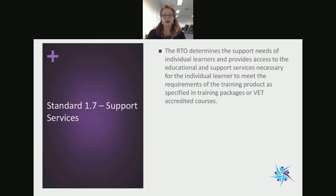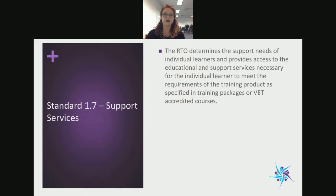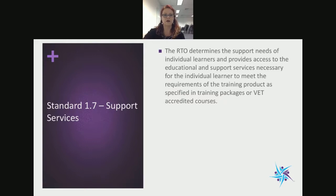You may have noticed that we updated the training and assessment strategy document and the enrolment agreement form recently. If you go onto Unicorn, you'll see under your documents there are two new documents. You'll need to go to the TAS under training and assessment strategy and download the enrolment agreement form under student forms. The TAS has been redeveloped to include CRICOS and adapted for delivering training overseas.